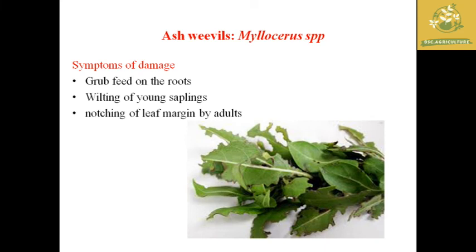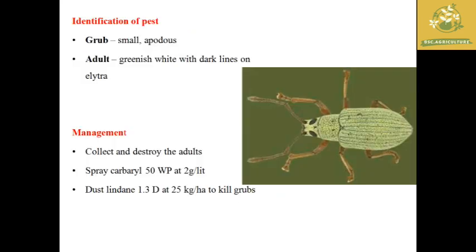The next pest is Ash Weevil, where the scientific name is Myelocera species. The major symptom is that the grub feeds on roots, causing wilting of young saplings, and notching of leaf margins by adults is a sign of its presence. The grub is small and rough at the first stage, while the adult is greenish-white with dark lines on the elytra. Management includes collection and destruction of adults, spraying chlorpyrifos 50 WP at 2 grams per liter, and dusting lindane at 25 kg per hectare to kill grubs.